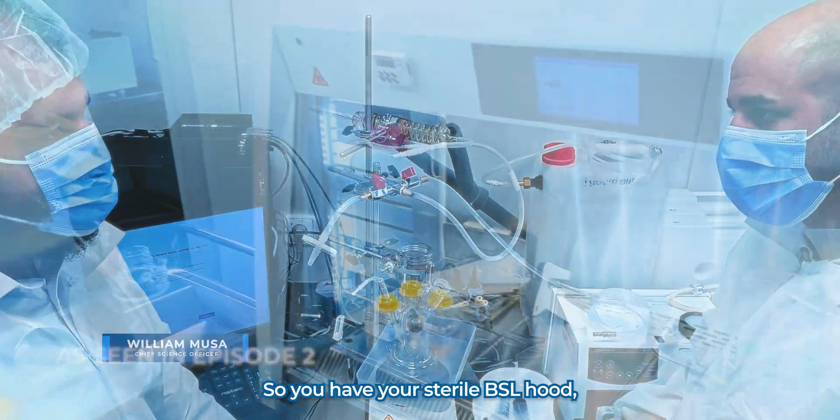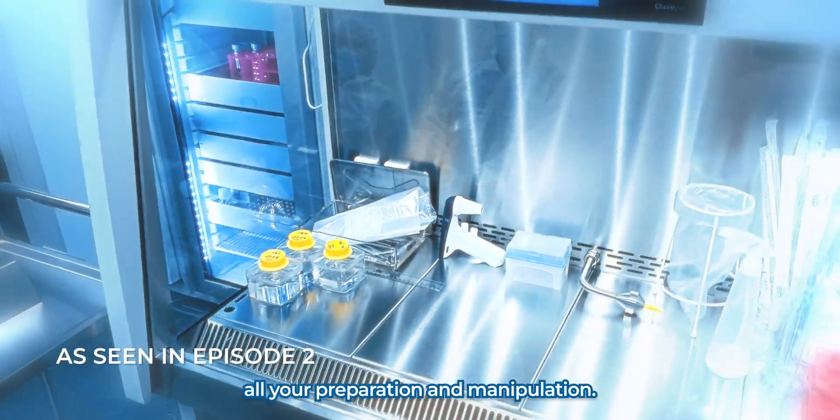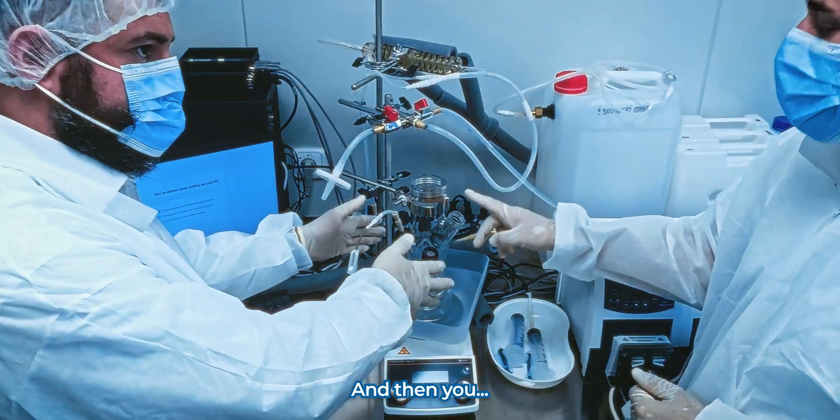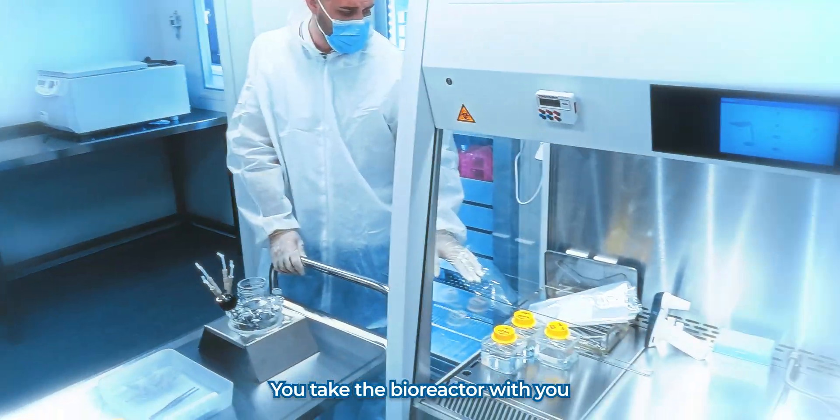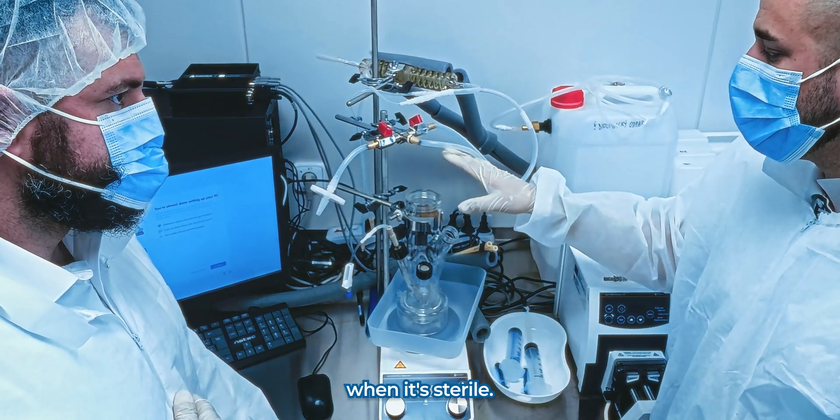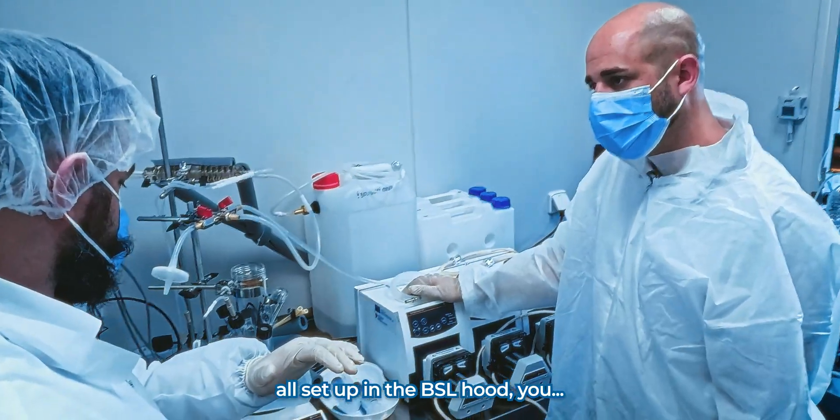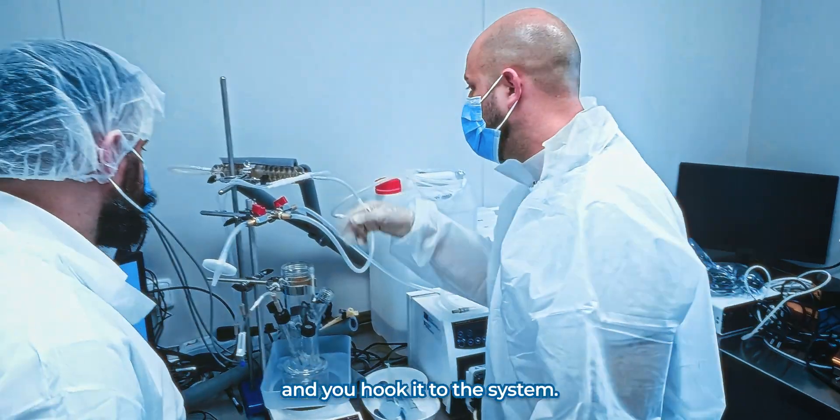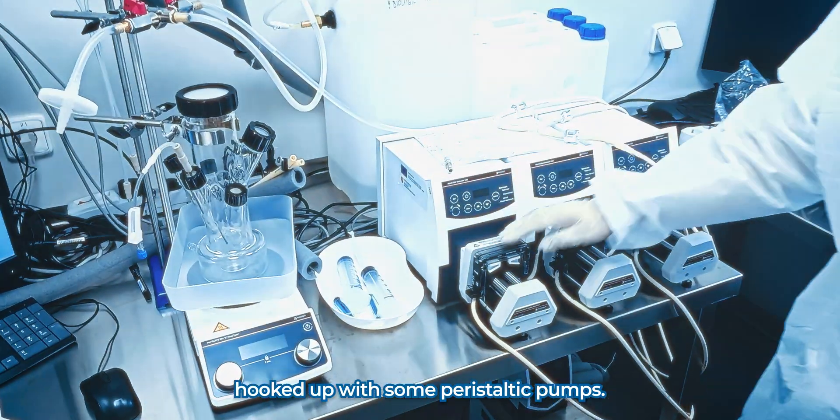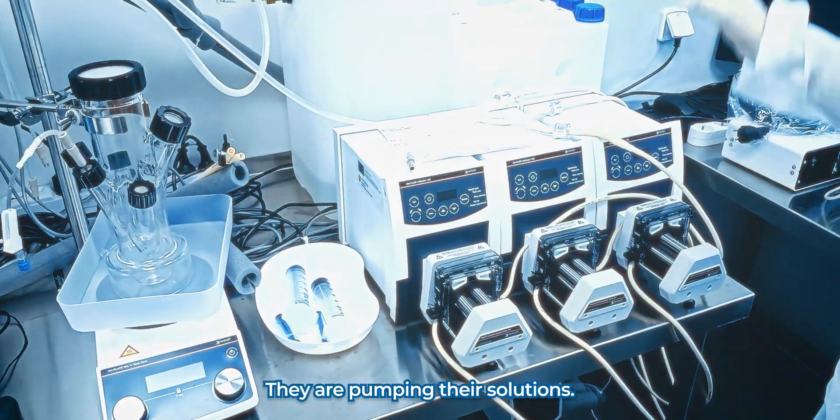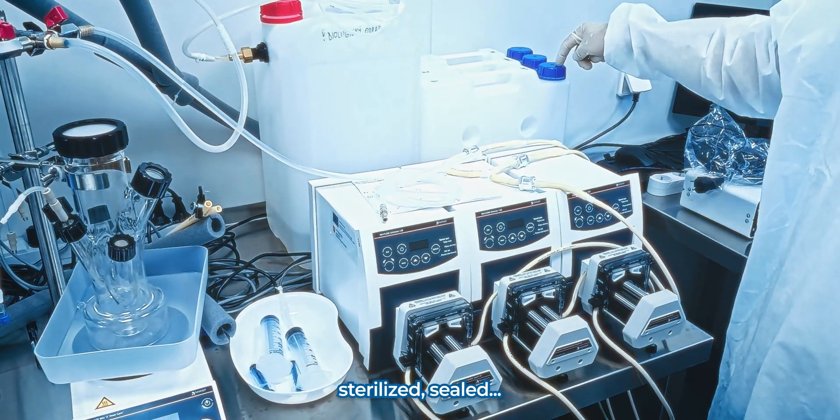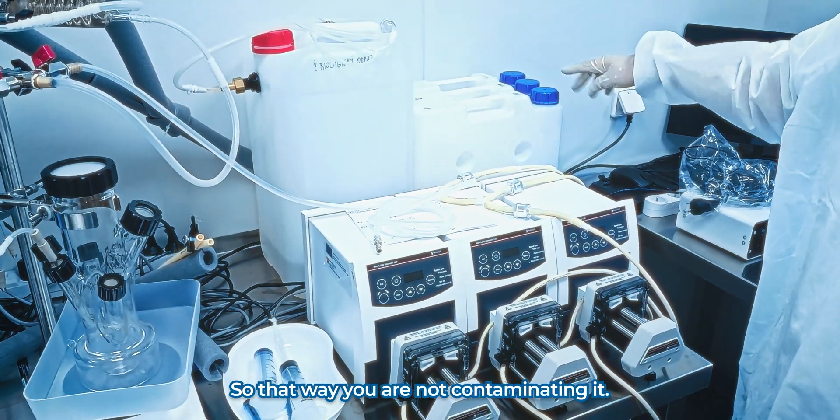So you have your sterile BSL hood where you can do all your preparation and manipulation. And then you take the bioreactor with you to the hood because you need to seal it when it's sterile. And then once you're all set up in the BSL hood, then you go here and hook it to the system. So the solutions need to be prepared, sterilized, sealed on membranes, so that way you are not contaminating it.